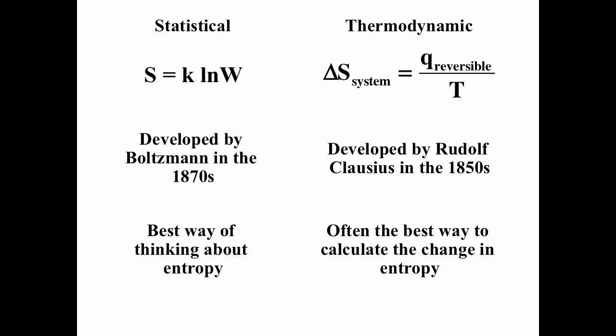A great way to think about entropy is as a measure of the number of configurations for the system: S = k·ln(W), where W is the number of configurations. This equation was developed by Boltzmann in the 1870s. There is also a thermodynamic definition: ΔS_system = q_reversible / T, developed by Clausius in the 1850s. Often this is the best way of calculating change in entropy.